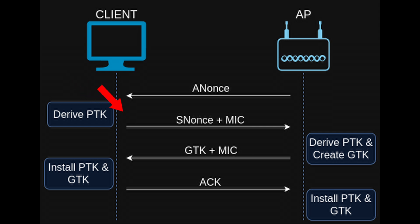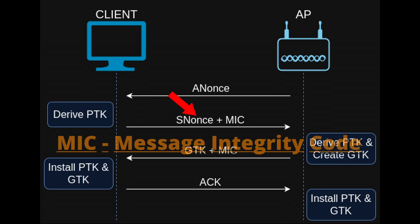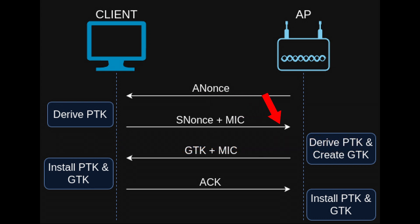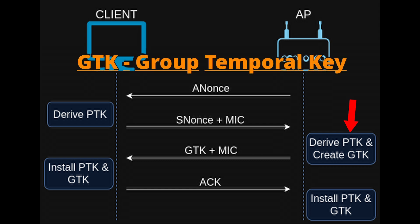In the second message, the client sends over the SNonce, which is its random number, and also the Message Integrity Code, which we will also come back to later. After that, the access point derives the PTK and creates the GTK, which stands for Group Temporal Key.